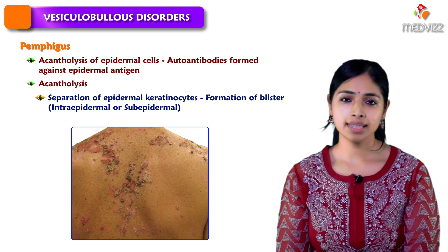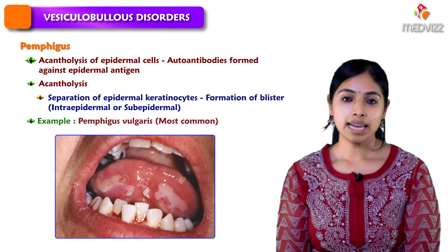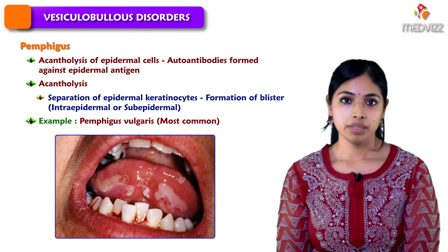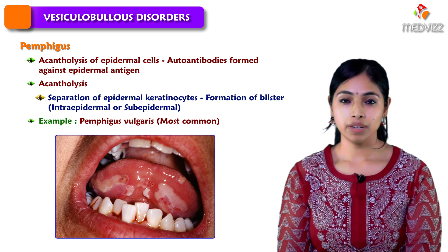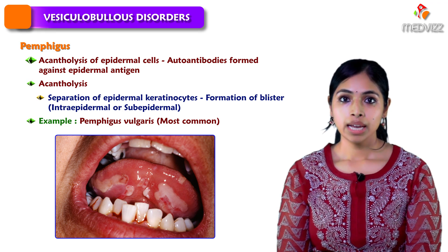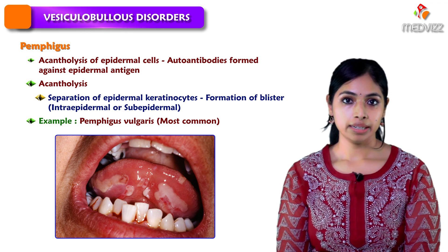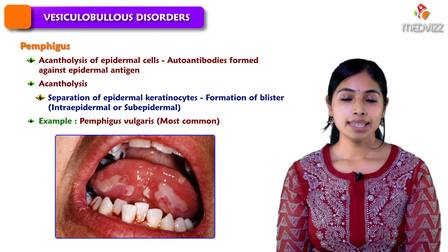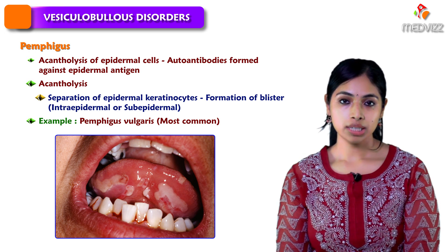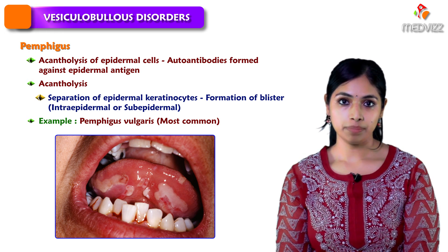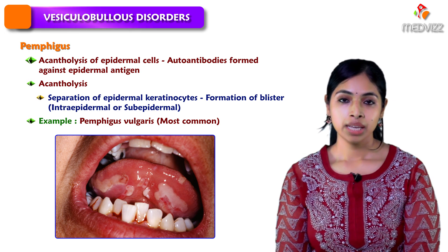The classic example of the Pemphigus group of disorders is Pemphigus vulgaris, and this is also the most common condition. It is often seen in the middle-age group of lower socioeconomic status.